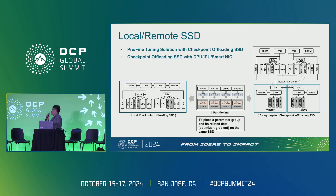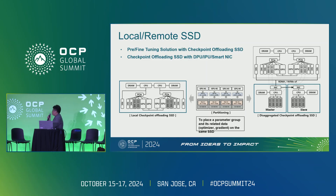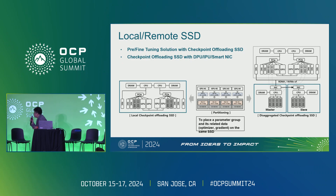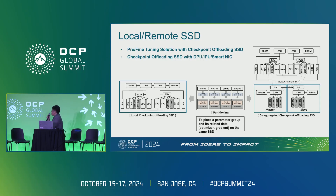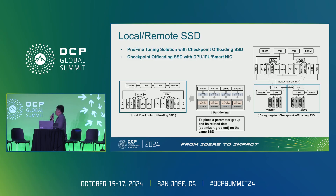For system integration, we consider local and remote SSD versions. On-premise, as a local SSD with DPU, IPU, and SmartNIC configurations, it can support pre-training and fine-tuning. To apply the checkpoint uploading SSD, a parameter group and its related data must be placed on the same SSD. As shown in the middle figure, the parameter group (blue box) must be matched with the related optimizer and gradient data (orange box) on the same SSD, requiring file-based partitioning.